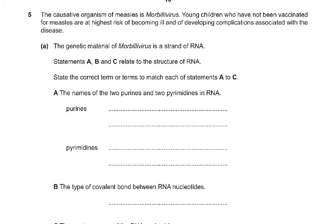Question five. The causative organism of measles is morbilli virus. Young children who have not been vaccinated for measles are at highest risk of becoming ill and developing complications. Please remember, measles is no longer in your syllabus, but we will talk about it for certain reasons.